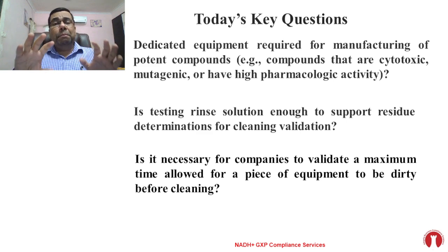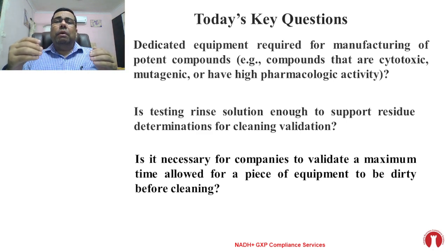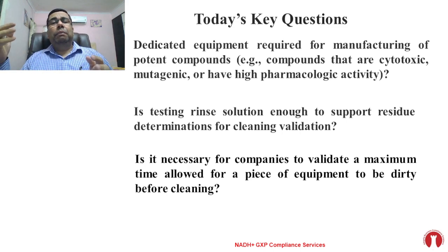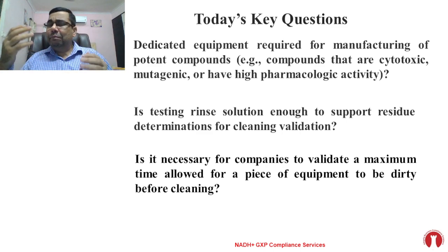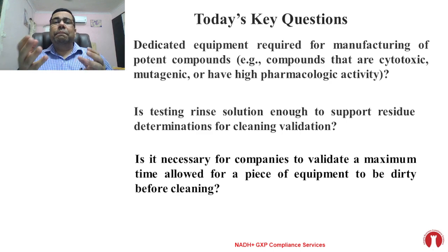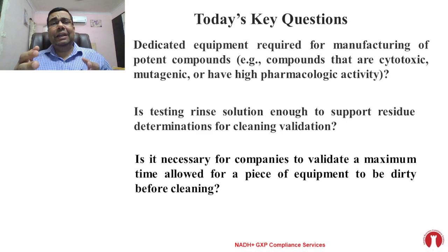Why do they ask? The reason is companies may be manufacturing a normal category of product, and only exhibit batches are involved — and we don't know whether those exhibit batches will be approved by the regulatory agency. So just for that, building a new facility or purchasing new equipment may not be suitable for any manufacturing unit. So how practically can you comply with the requirement? That is why the question arises: can we manufacture these potent molecules in the existing facility?